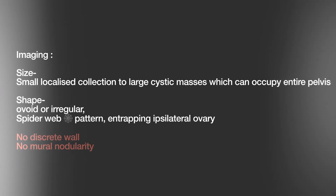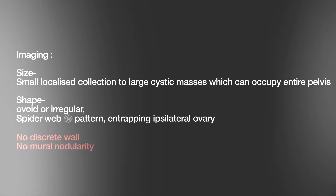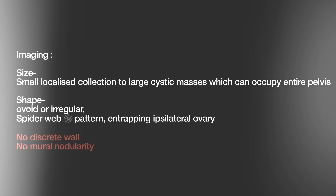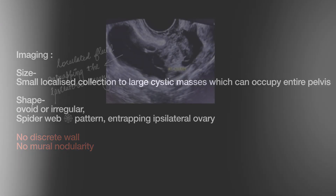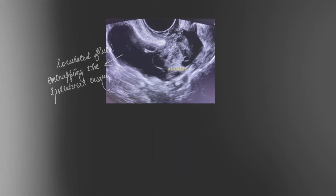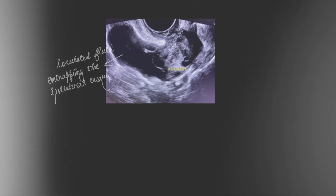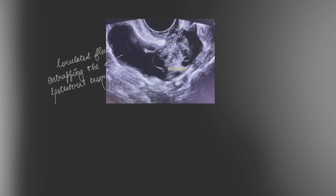There will be no discrete wall and no mural nodularity in a peritoneal inclusion cyst. This is the classic picture: an ovoid or irregular cyst with a spider web pattern, no discrete wall, and no mural nodularity. On this transvaginal scan you can see a loculated fluid collection trapping the ipsilateral ovary — the classic picture — with no wall thickening, no mural nodularity, and no internal vascularity.